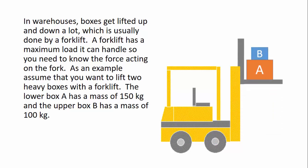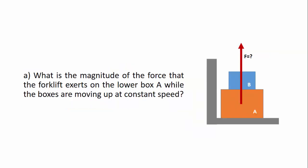The lower box A has a mass of 150 kg and the upper box B has a mass of 100 kg. Part A of the question asks: what is the magnitude of the force that the forklift exerts on the lower box A while the boxes are moving up at constant speed?